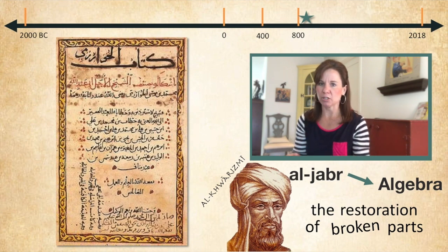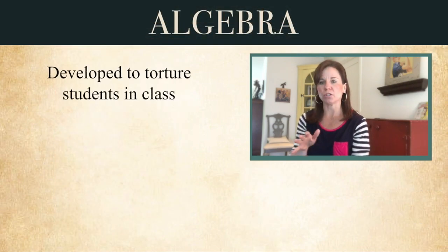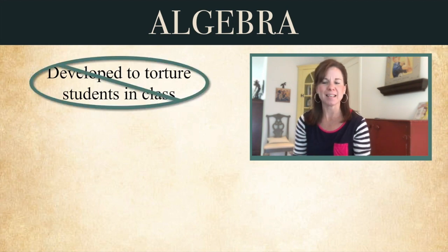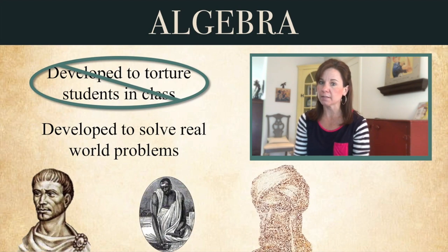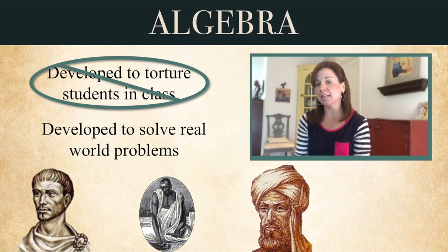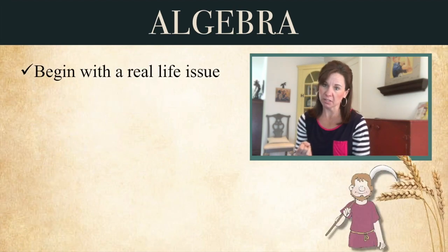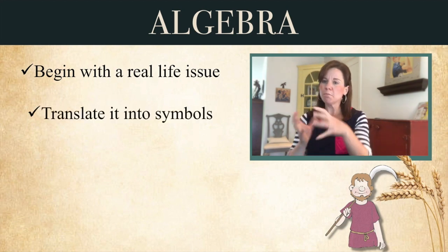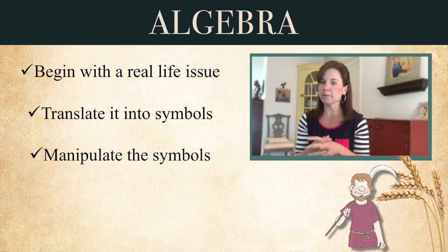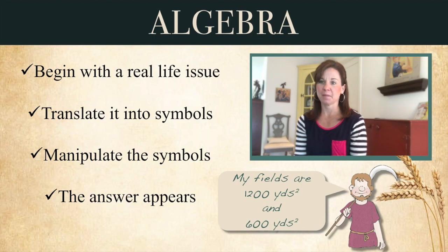I'm going to stop there in algebra's history, because my main point is this. You may think that algebra was developed just to torture students in class. But it wasn't. Algebra developed over time to solve real-world problems. And when you stop to think about it, it really is just a cool process. You start with a real-world problem, just like our farmer did. You translate that problem into symbols. You manipulate those symbols according to certain rules. And then the answer just appears. It's like magic — it's magic. But it's math.